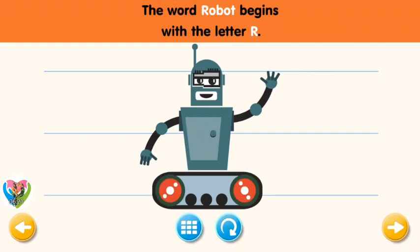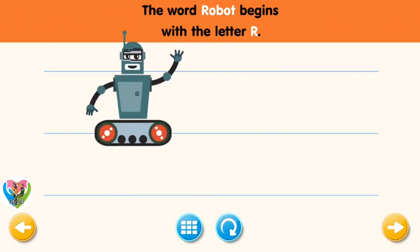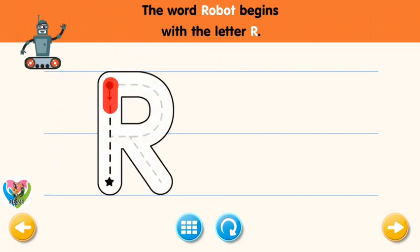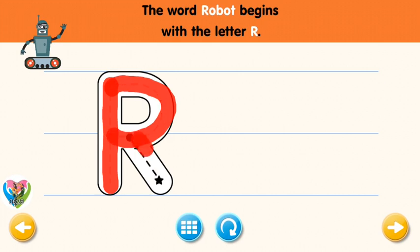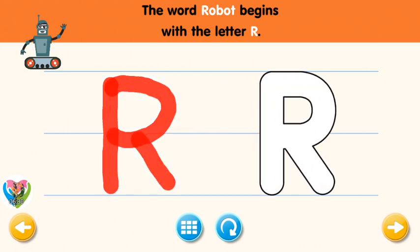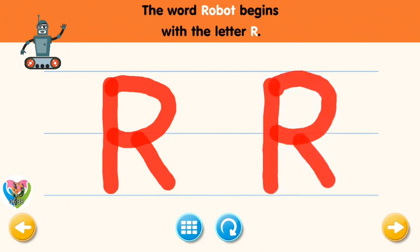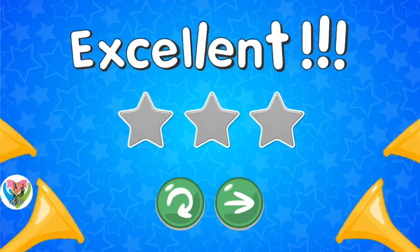The word robot begins with the letter R. Trace the letter R. Connect the dot and the star with a line. Excellent! Now write the letter R yourself. Excellent!